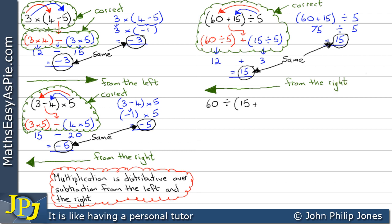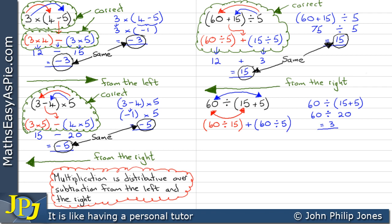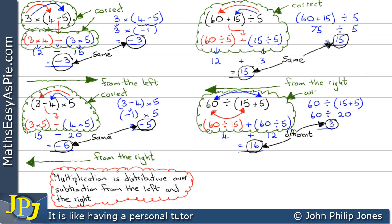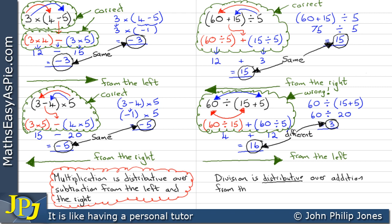Let's do another example. Let's take 60 and divide that by the addition of 15 and 5 in brackets. If we do that over here we can see we end up with 60 divided by 20, which gives us 3. Now if I take the 60 and divide that by the 15, and then take the 60 and divide that by the 5 and add them together — we end up with 4 plus 12 giving us 16. We can see they are different, so something's gone wrong. This particular step is wrong. When we do this from the left we end up with the wrong answer. Division is distributive over addition from the right but not the left.